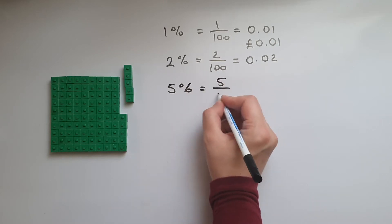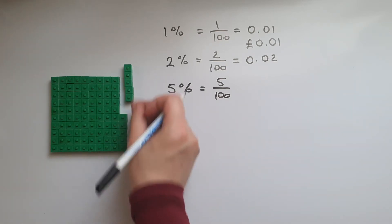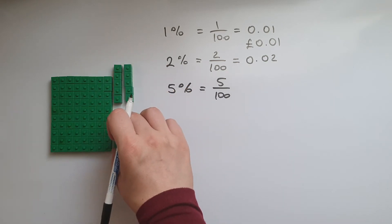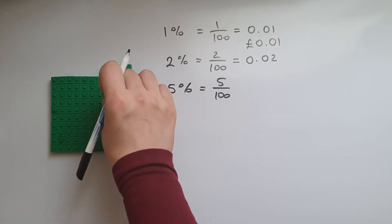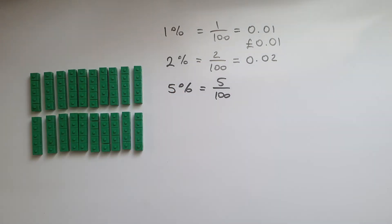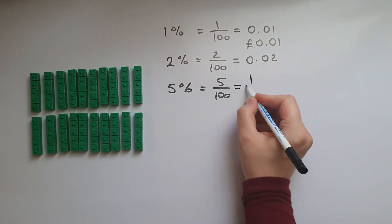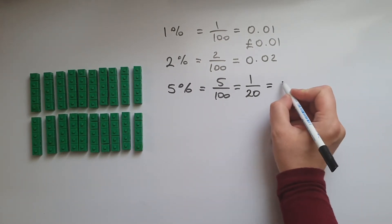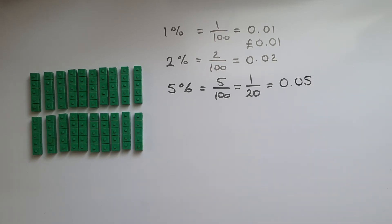Five percent is five out of 100. How many fives do we have in 100? It's 20 of them, so we can write this as one twentieth as well. And that would be 0.05 — like five pence.